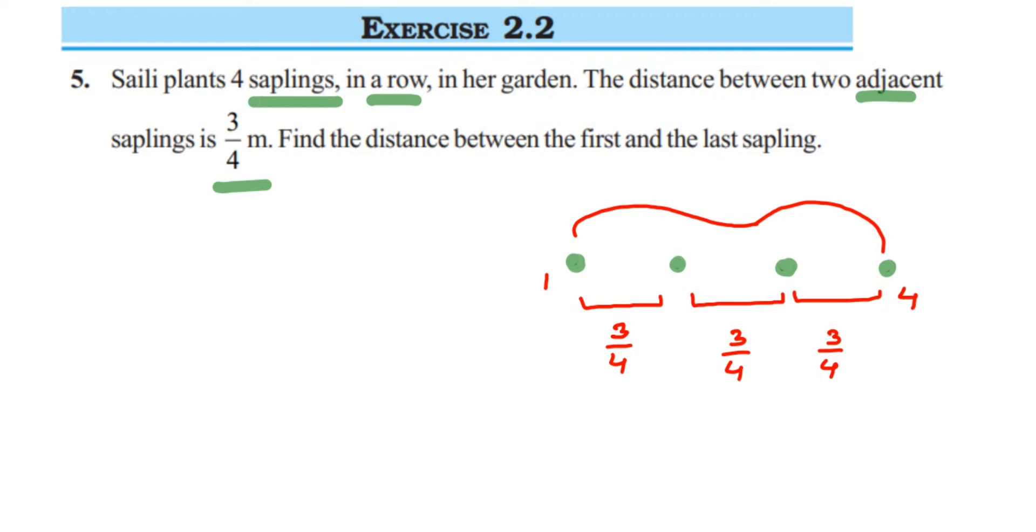You can see that we know the total distance. 3 by 4, 3 by 4, 3 by 4. If you add them up, you will get it. But instead of adding 3 by 4 three times, we can use multiplication.